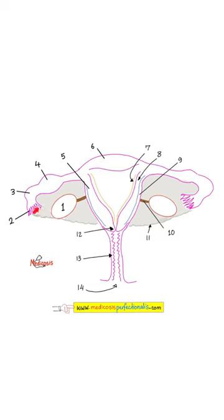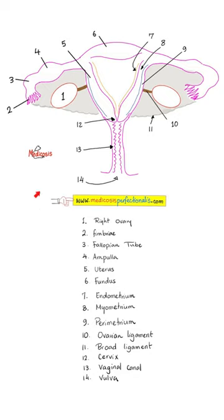Every 28 days, boom, ovulation. And then the secondary oocyte is caught by the fallopian tube. There are more than 1600 videos on this channel. Follow for more.